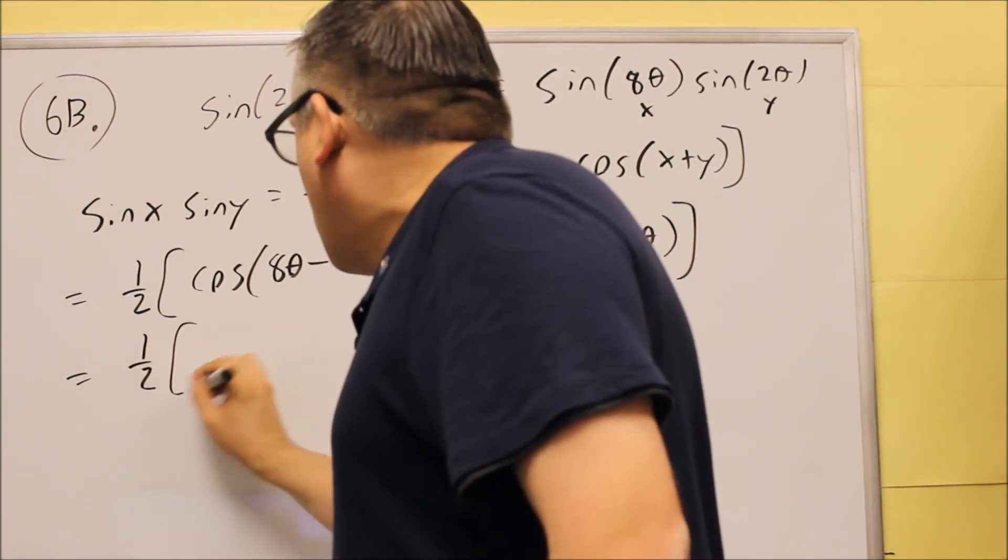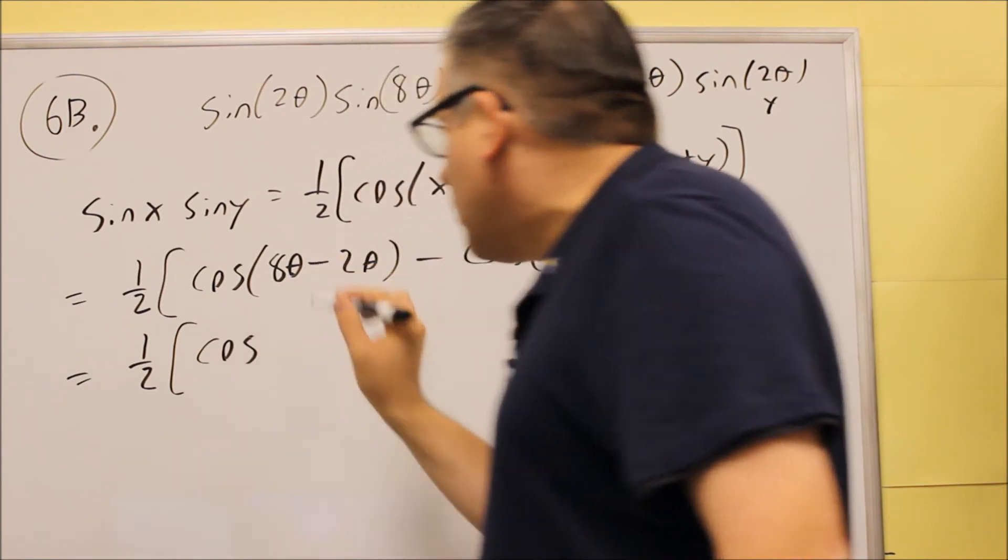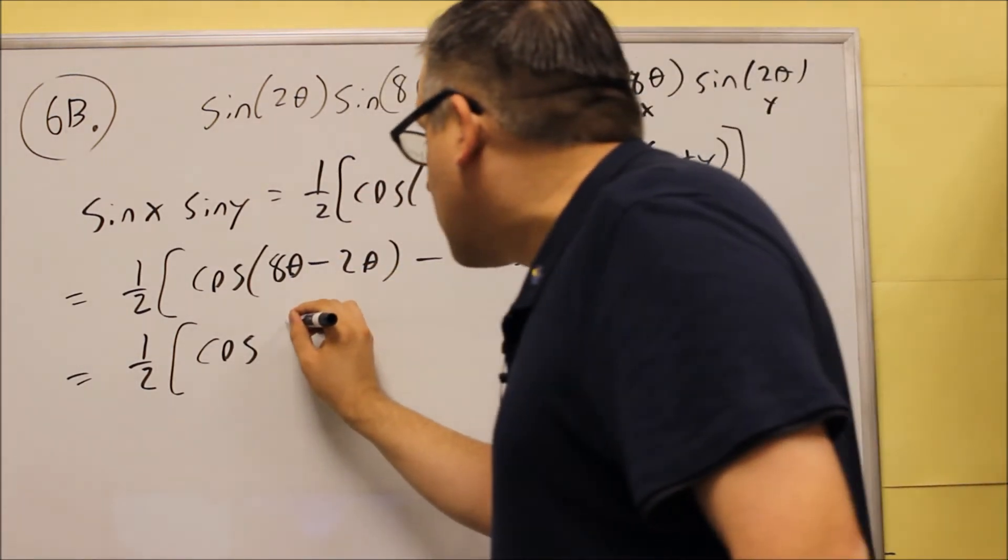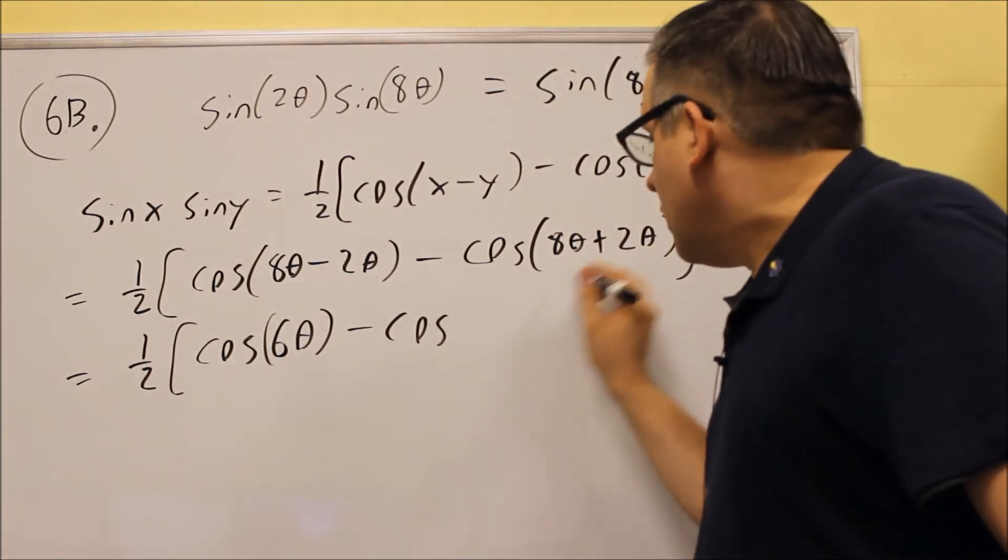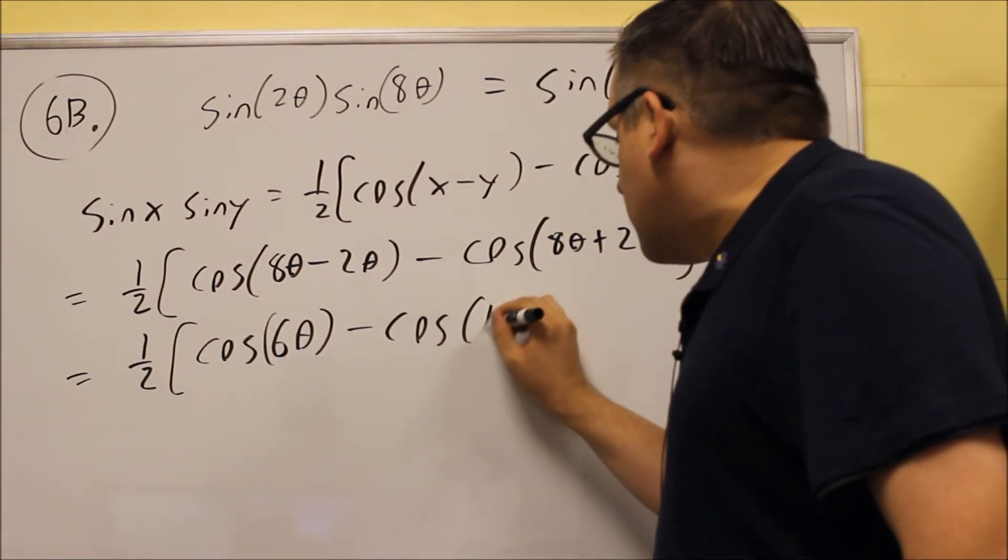In this case, all we can really do there is just do eight theta minus two theta and make it six theta. Then we have minus cosine of eight plus two is ten theta.